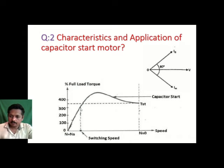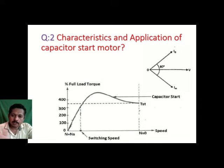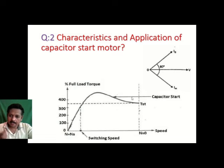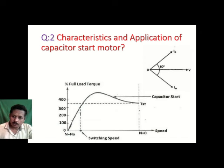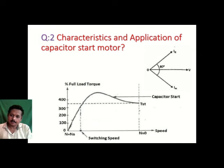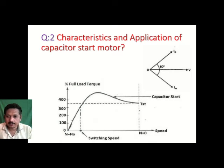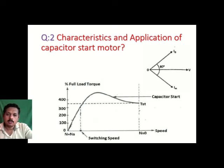Once the motor starts, at 75 to 80% of synchronous speed the centrifugal switch operates and disconnects the auxiliary winding, so the motor runs only on the main winding. This is the similarity between the resistance and capacitor start motor — their main winding is made of very fine copper material. So the running characteristic is similar to the resistance split phase motor, but we get a much better starting torque. In running, both resistance and capacitor start motors are similar.